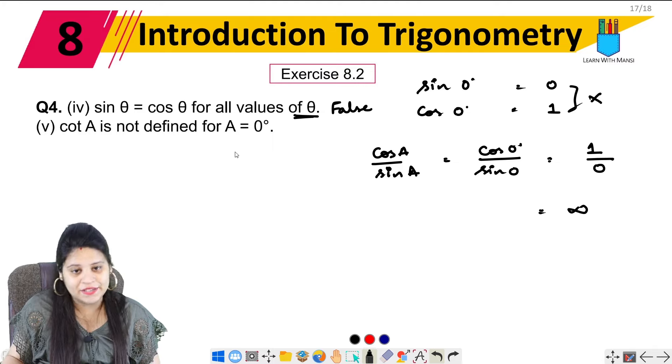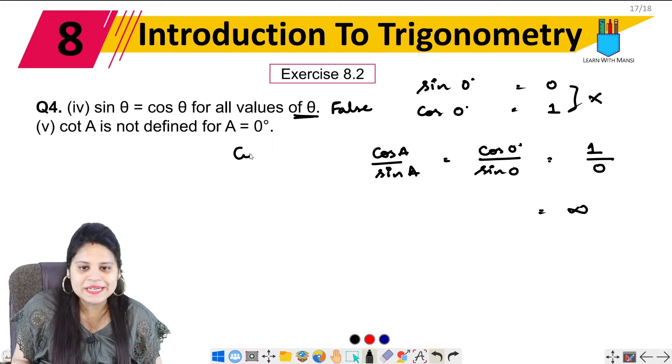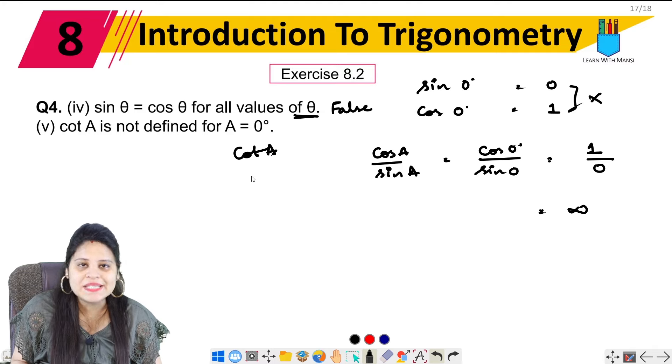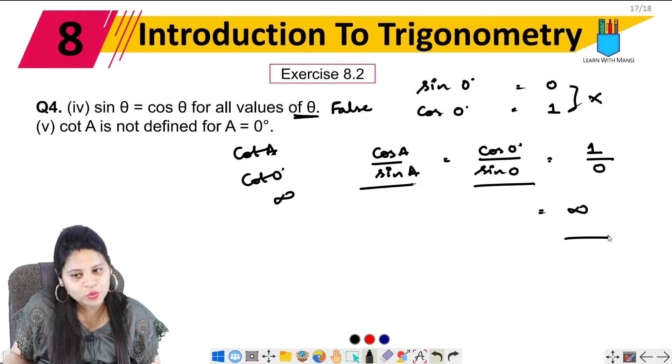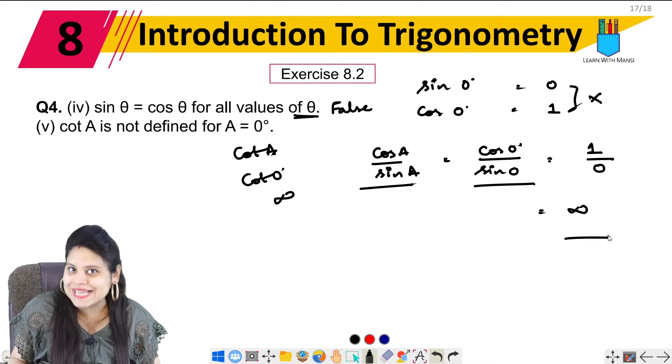Basically, we can do it simply here. Cot A, which means A is 0, cot 0 degree is not defined. But let's prove how it's not defined. Okay? So this was our last question.